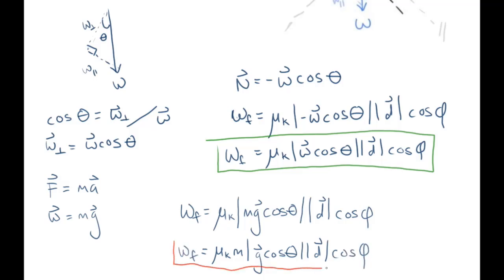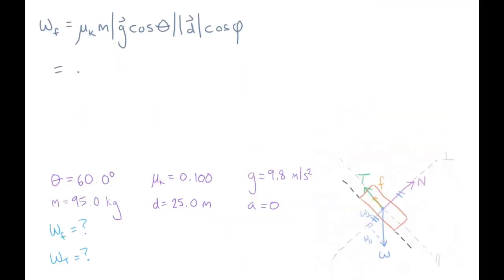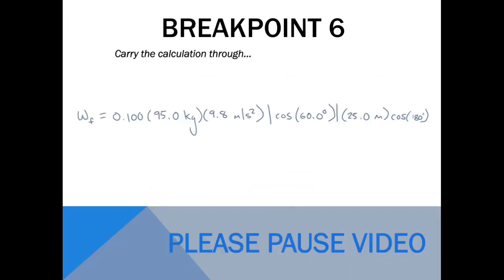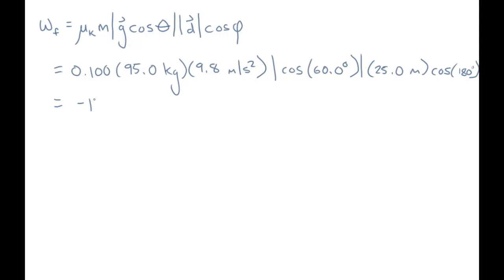Now all that's left is to plug in the values. WF equals 0.1 times 95 kg times the absolute value of 9.8 m/s² times the absolute value of cosine 60° times the absolute value of 25 meters times cosine phi. Since the force of friction was pulling up the slope and the movement is down the slope, phi equals 180 degrees. Carrying through the calculation, we get WF equals negative 1163.75 joules.